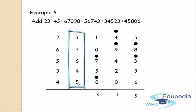The first digit in the thousands column is 5. Now 2 plus 5 is 7, and 7 plus 4 is 11, a two-digit number, so leave 1 and put a dot on top of 4. The remaining number 1 should be added to the next number 6, so 1 plus 6 is 7. Now 7 plus 7 gives 14, a two-digit number, so leave 1 and put a dot on top of 7. The remaining 4 is added to 3, so 4 plus 3 is 7 — write that 7 in the answer's place.